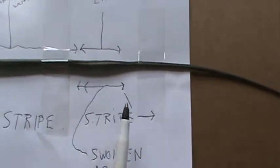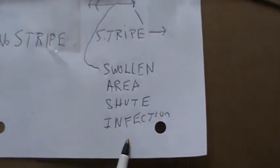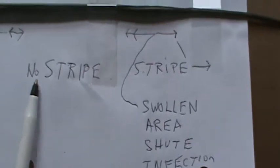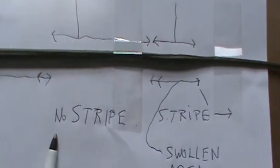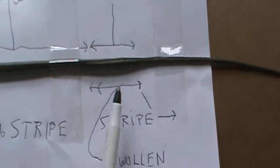I can't turn the snake over at the moment. Anyway, swollen area with chute infection. No stripe during a skinny section in the middle of the snake followed by the swollen spot.